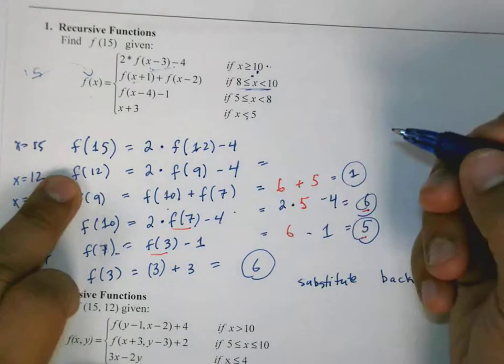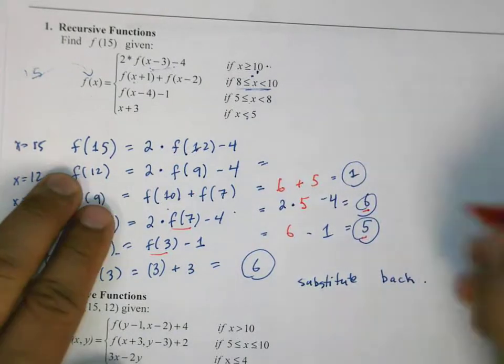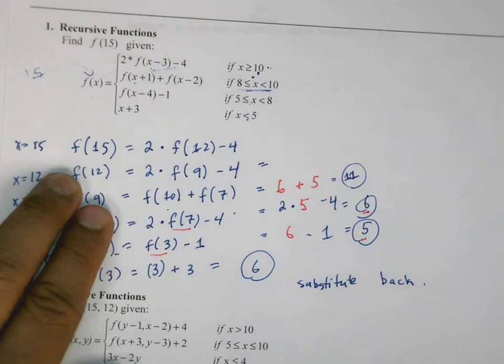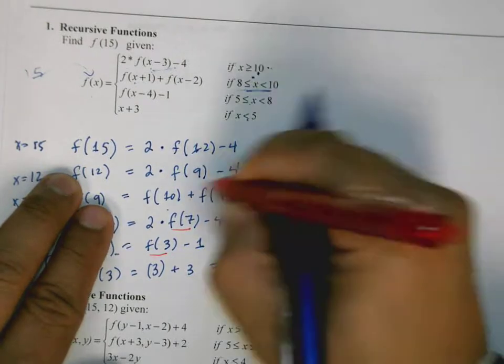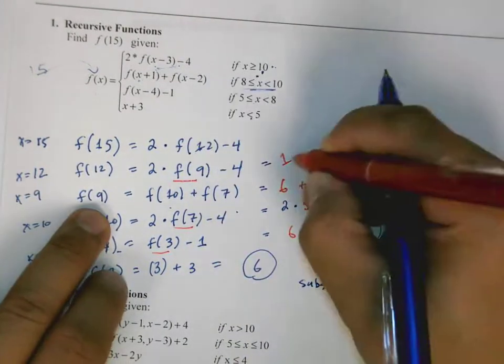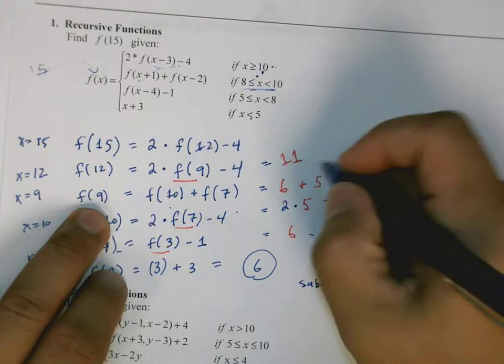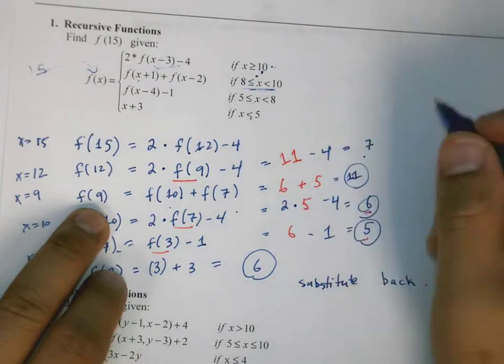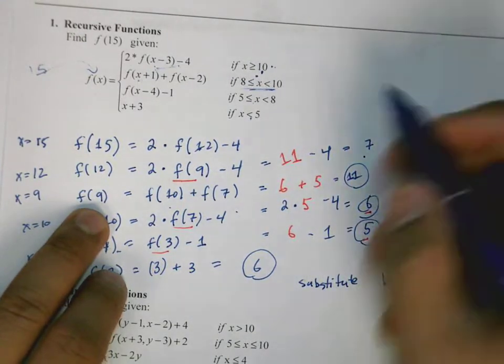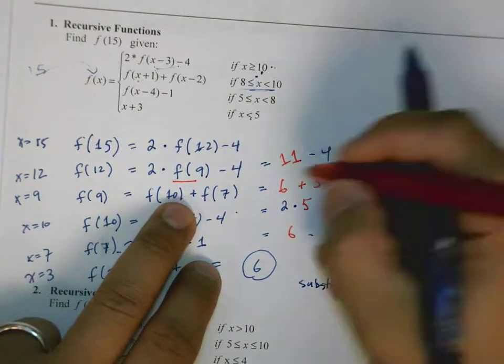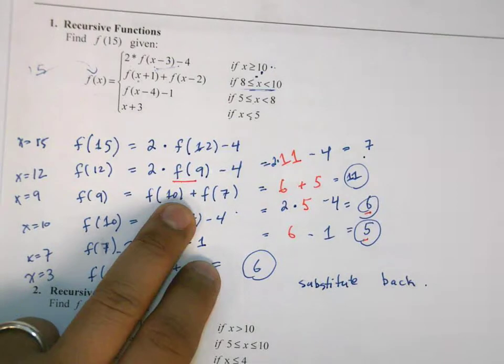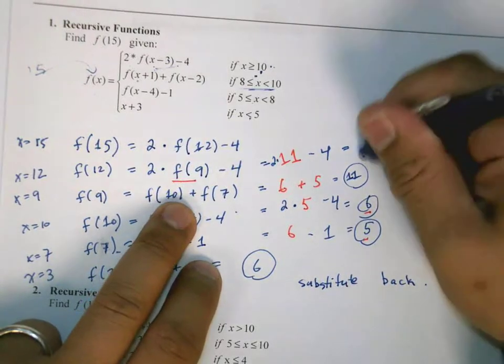Back up to here, f of 12, which is f of 9, which is 11. I don't know why I wrote 1, which is 11. Okay, f of 9, which we calculate down here as 11, minus 4, which is 7. I'm sorry, this is 11 times 2. What am I doing here? This is 2 times 11, minus 4. So that's 22 minus 4, which is 18.